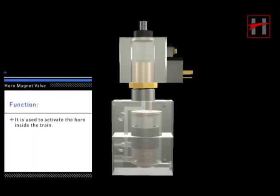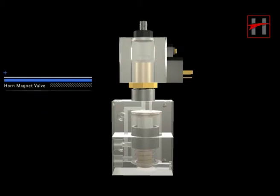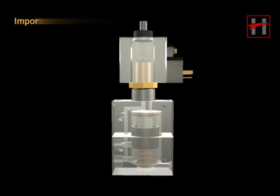The horn magnet valve is used to activate the horn inside the train. The important parts of the horn magnet valve are valve magnet.